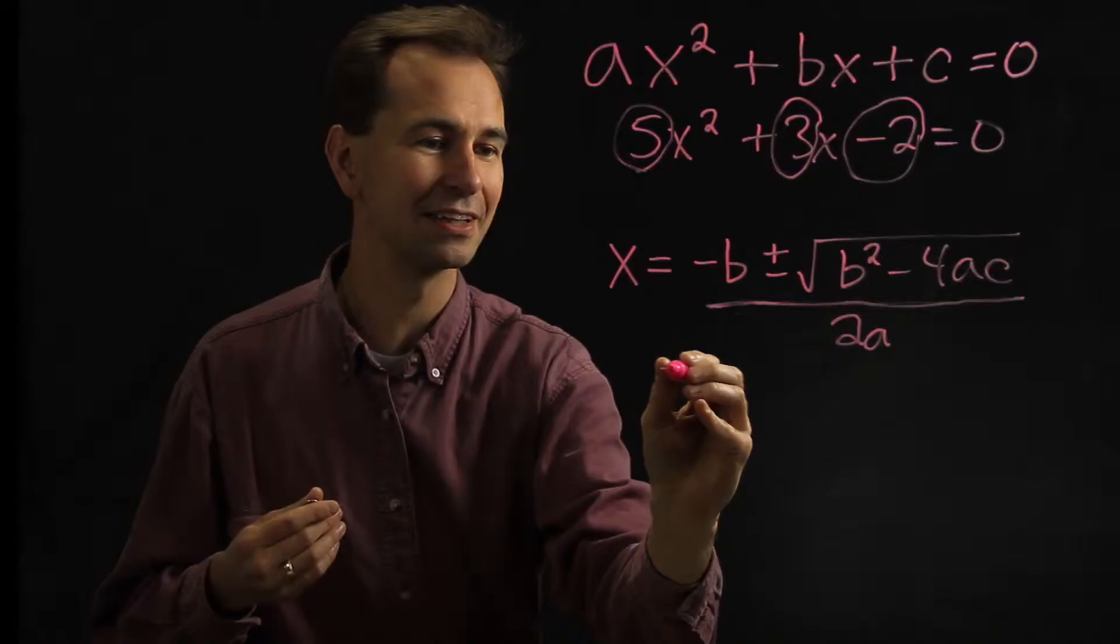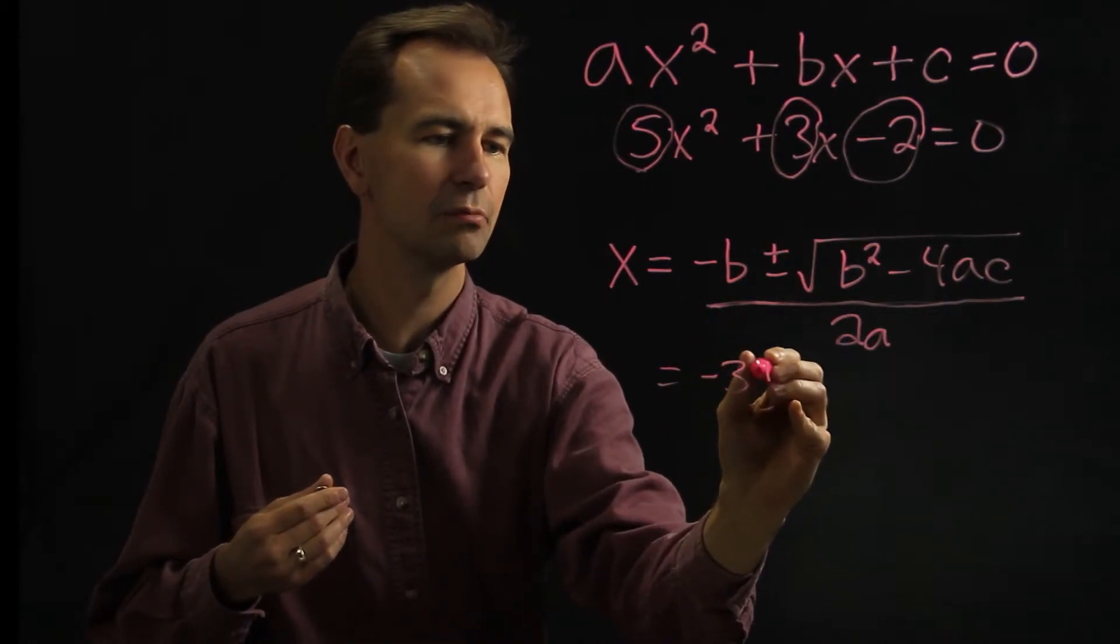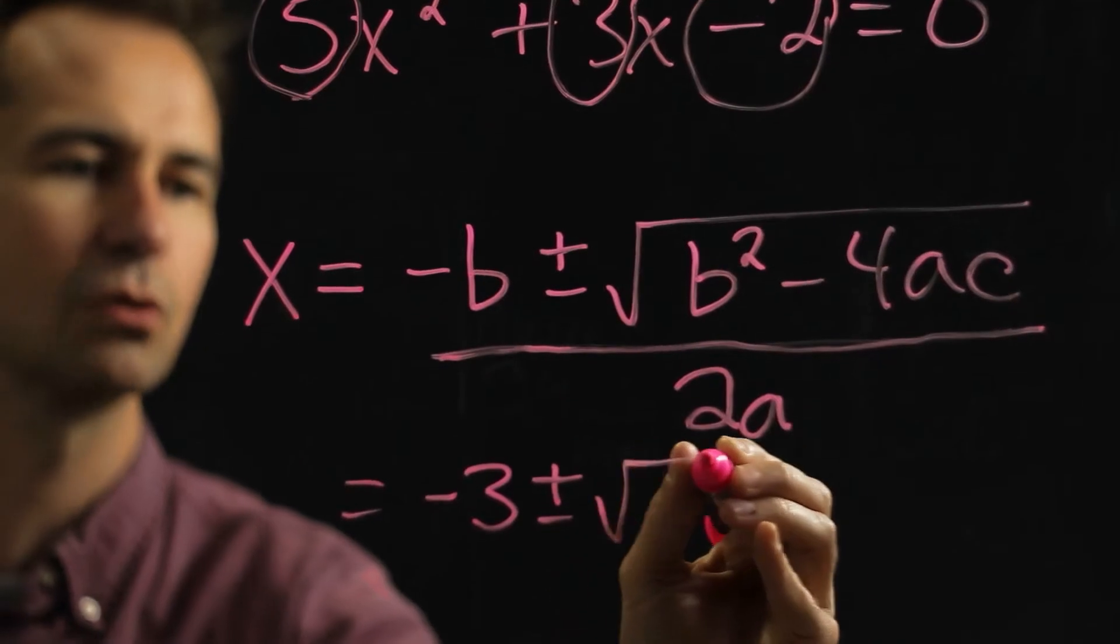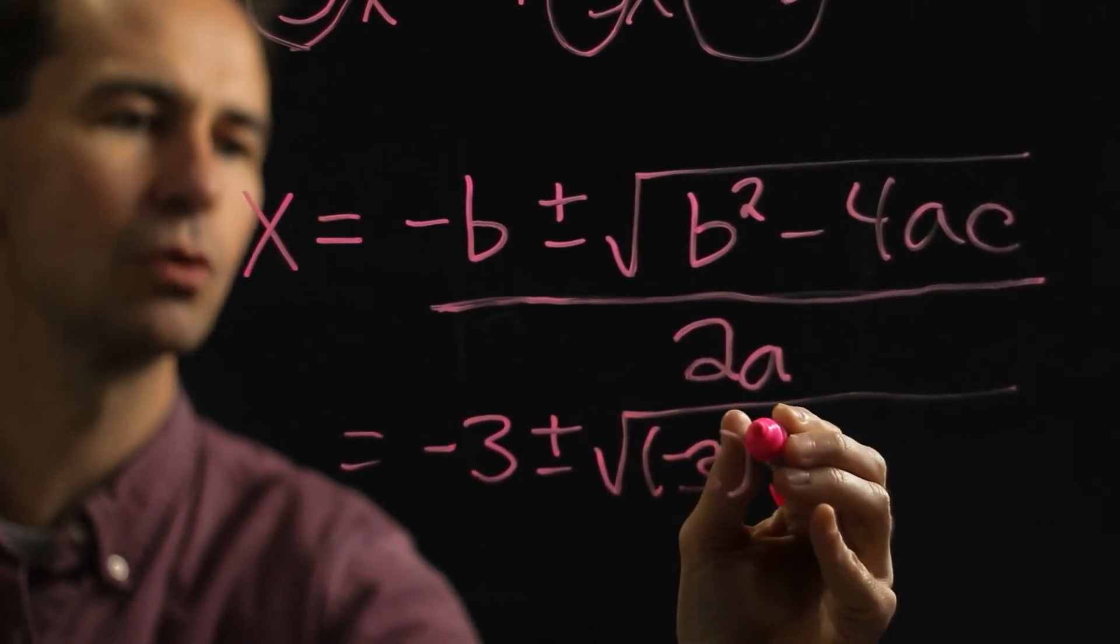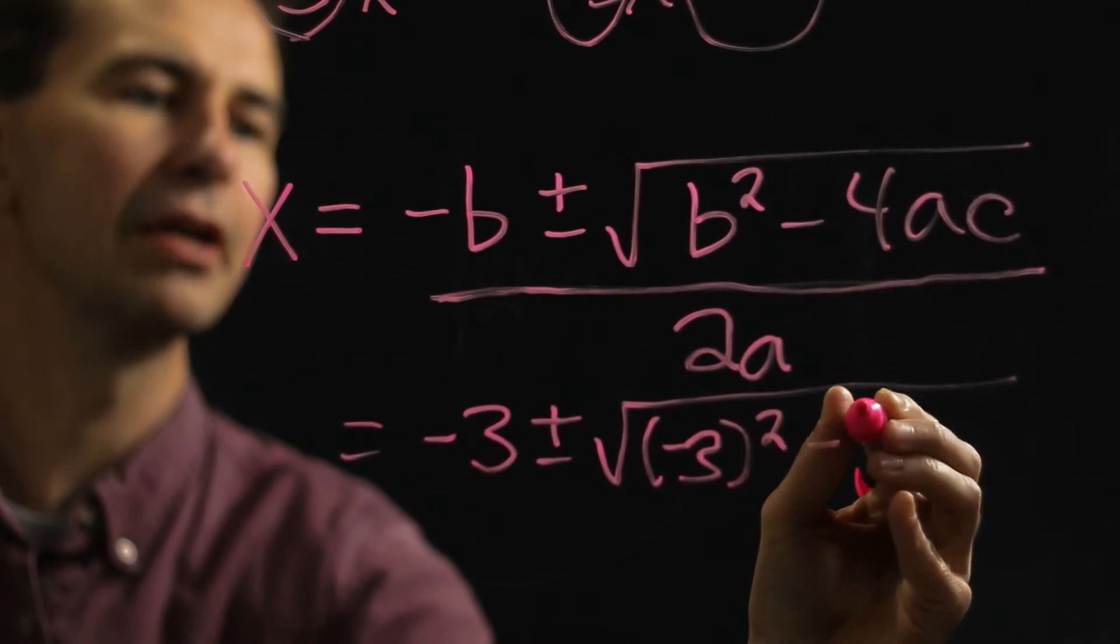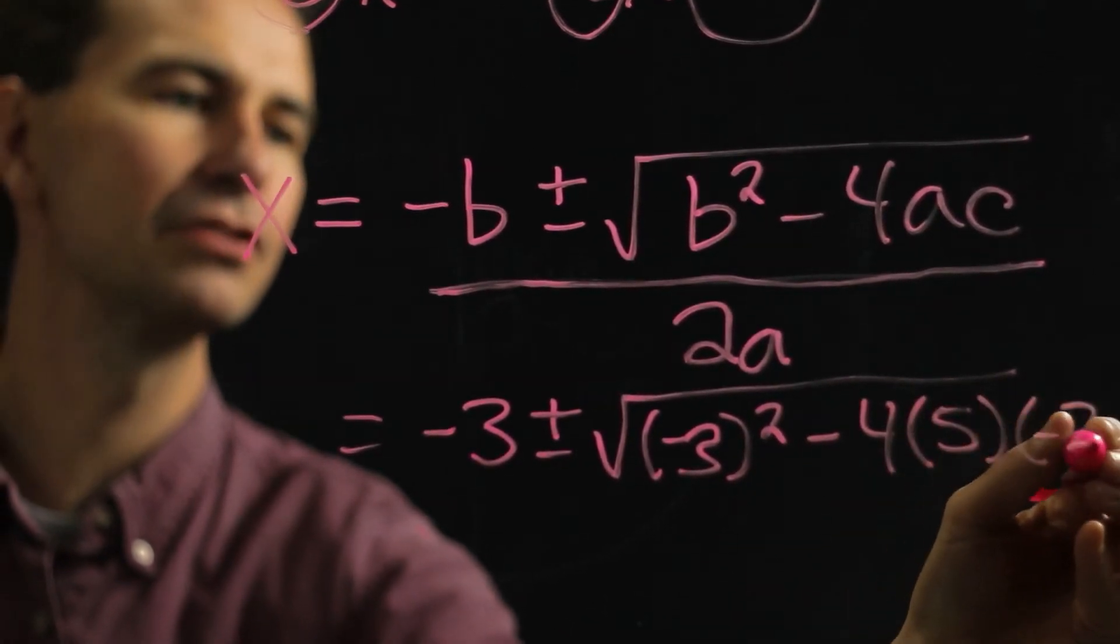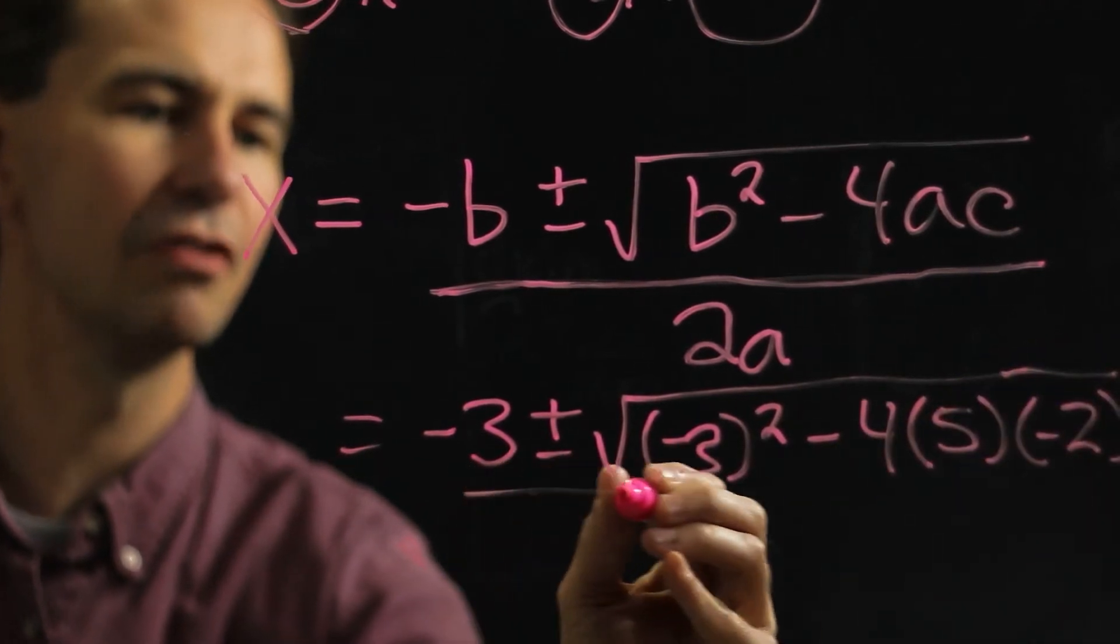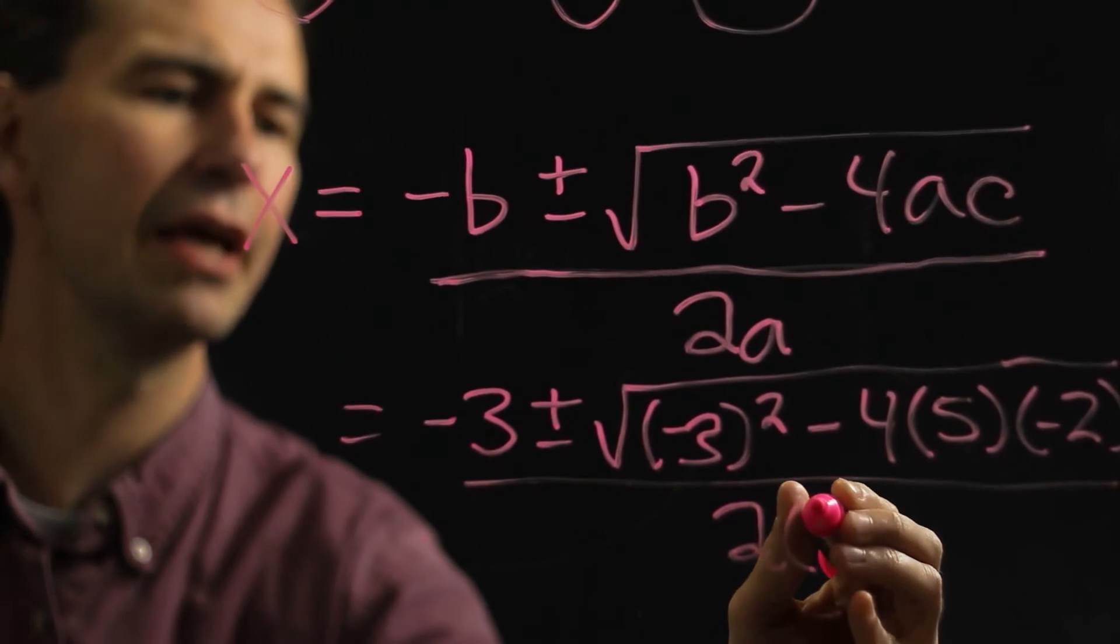So what we'd end up with here is negative b, so that would be negative 3, plus or minus the square root of 3 squared minus 4 times 5 times negative 2. And then we would divide that whole thing by 2 times a, which is 5.